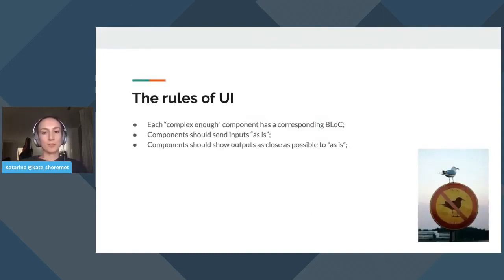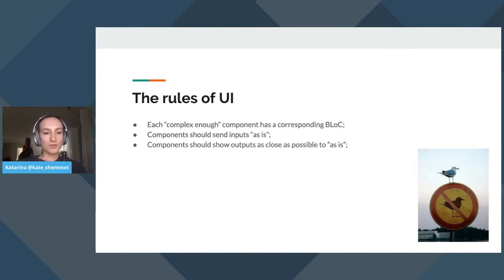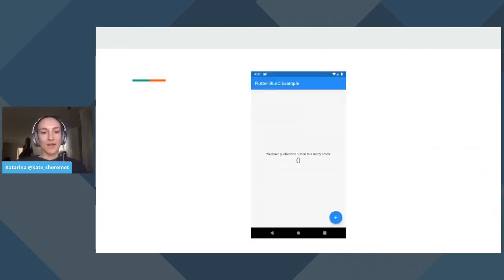There are some rules for the UI as well. Each complex enough component has a corresponding BLoC. Components should send input as is — if we have a text field widget where the user types some data, we send it as it is without changing it, because modification is already business logic. And if we get data from BLoC, it should be as close as possible to the output we are aiming to show. All modifications should happen in business logic.